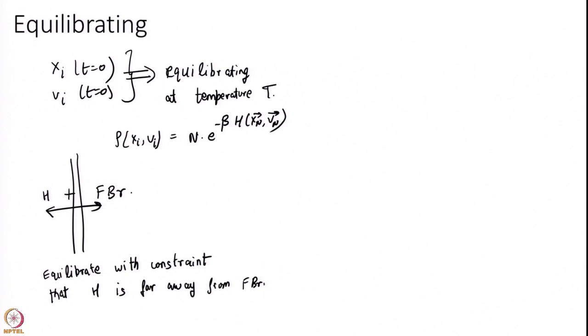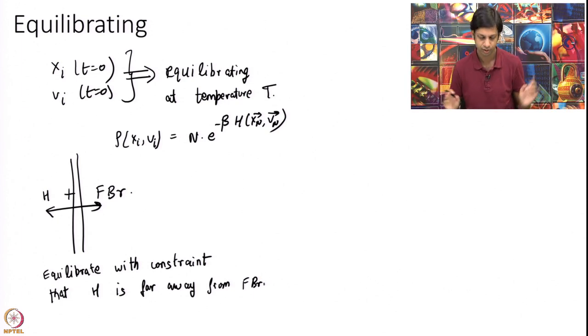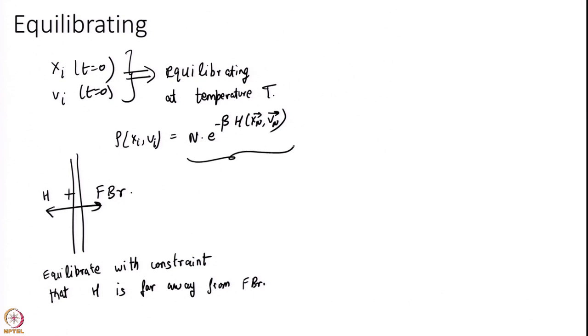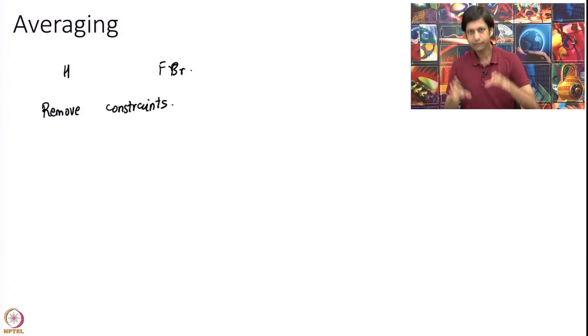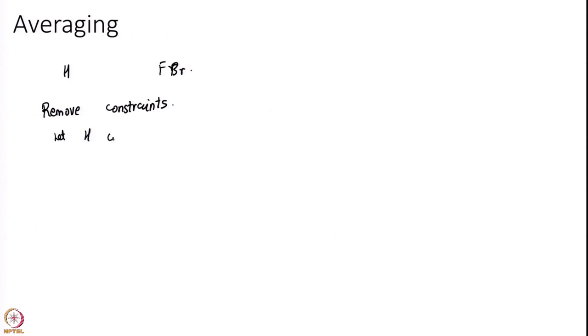How to put these constraints is a matter of detail and that actually is really for a different course which is on molecular dynamics. But there are ways that I can tell that. I have put the hydrogen far away, I basically do MD simulation at a given temperature and I make sure that H and FBr are independently obeying this Boltzmann distribution. After that I remove my constraint. I have H and FBr far away then I remove my constraints.